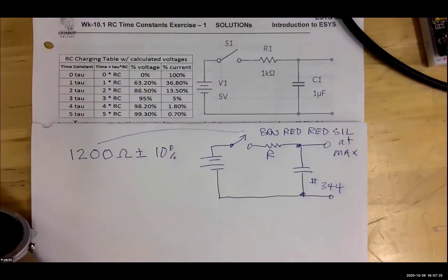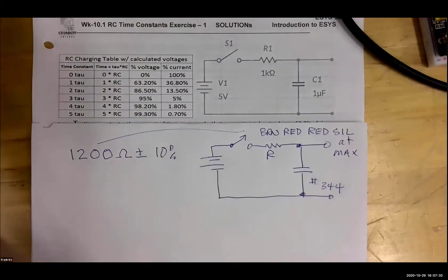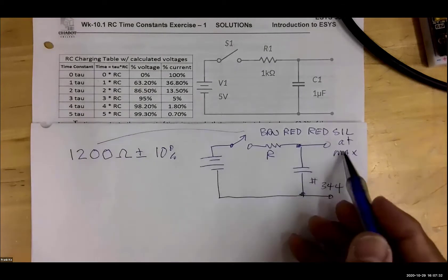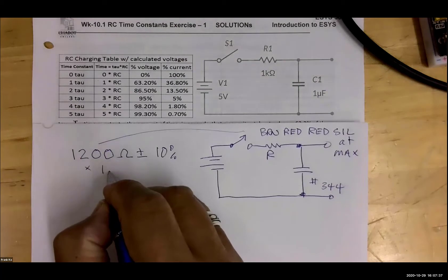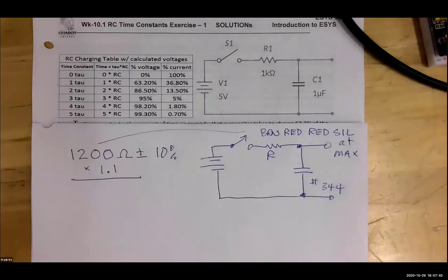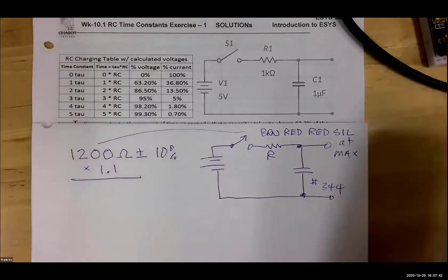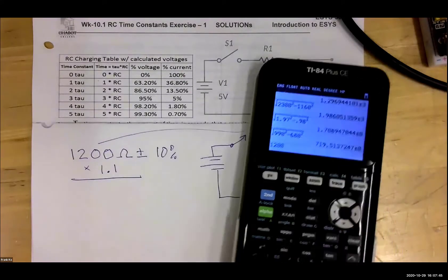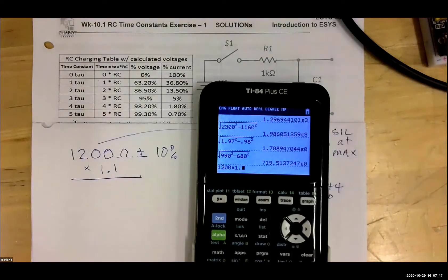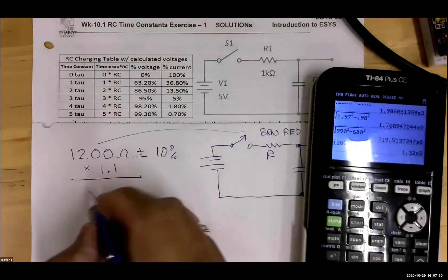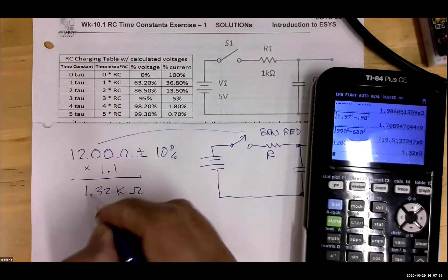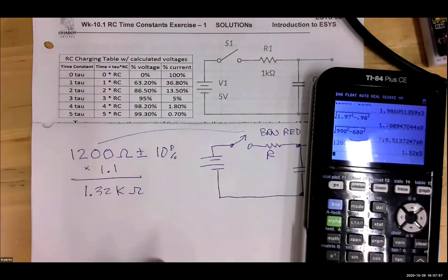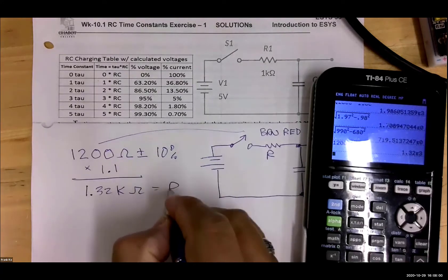Let me go back to speaker view so we can see this enlarged. This is at maximum, so that means we're going to multiply by a multiplier of 1.1. So go ahead and take 1,200 and multiply by 1.1 right now. We calculate 1,220, which is 1.32 k-ohms. So this is equal to R.